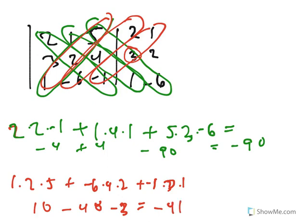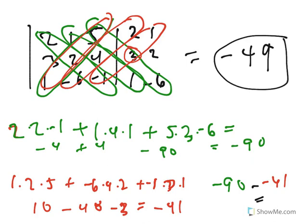And finally, we subtract these two numbers, minus 90 minus negative 41, and we get, as our answer, negative 49. So that's one way of finding the determinant of the 3 by 3. This is all kind of mysterious at this point. There are going to be some reasons for these rules, but for now, it's just how to do it.